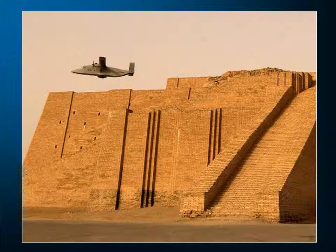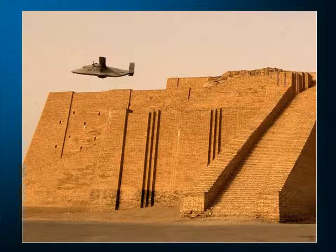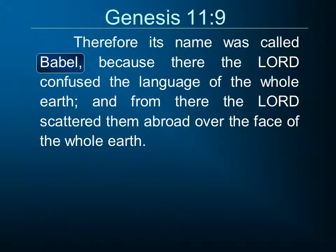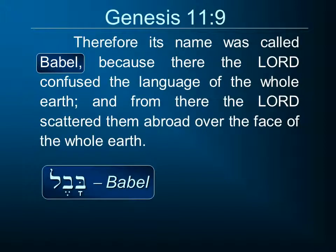A fellow sent me an email a few years back when the Americans were in Iraq, showing a reconstructed temple tower — a ziggurat — with a plane flying nearby, which I found fascinating. At the end of that time, God comes in and confuses the language to disperse the plan, and therefore its name is called Babel, because there the Lord confused the language of the whole earth, and from there the Lord scattered them abroad over the face of the whole earth.